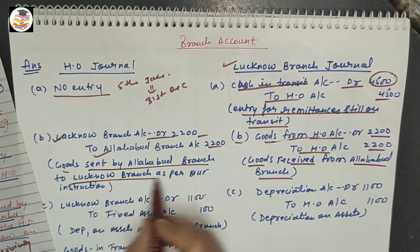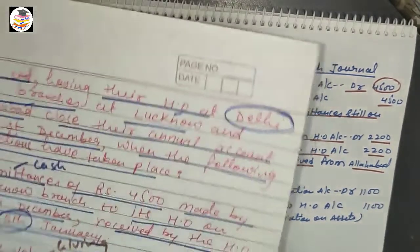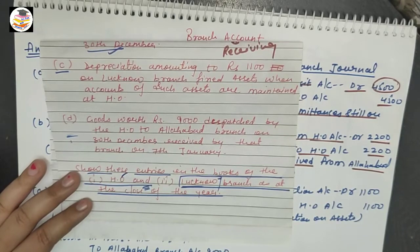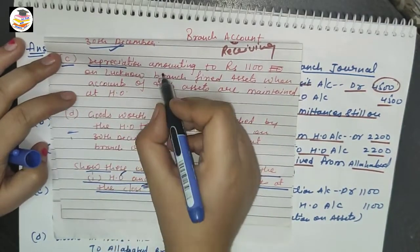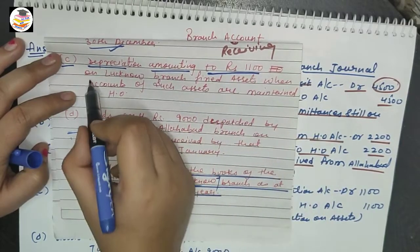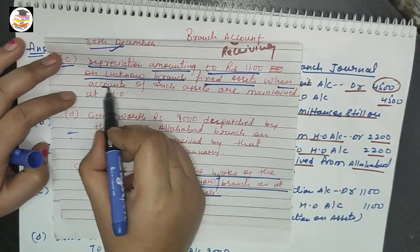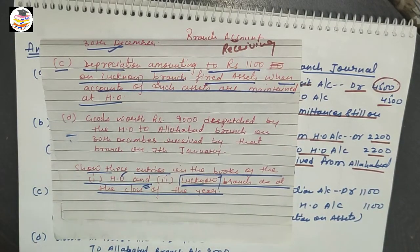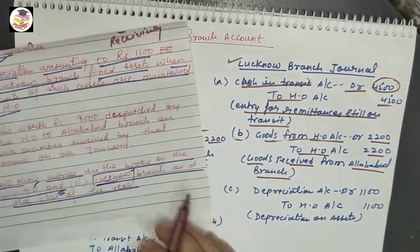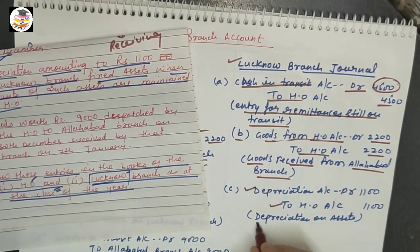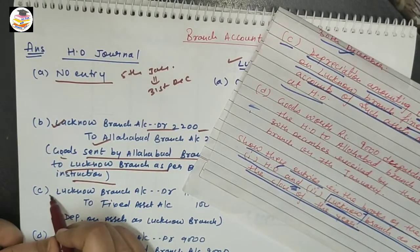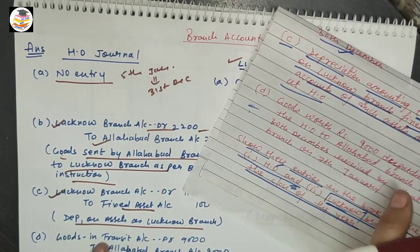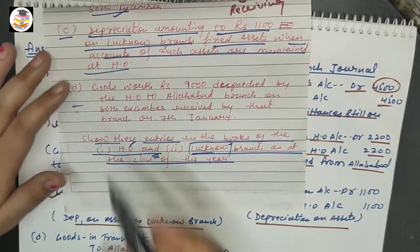The third transaction is depreciation amounting to Rs. 1,100 on Lucknow branch fixed assets, where accounts of such assets are maintained by the head office. The entry in Lucknow branch books is: Depreciation Account debit, To Head Office Account. The entry in head office books is: Lucknow Branch Account debit, To Fixed Assets Account.